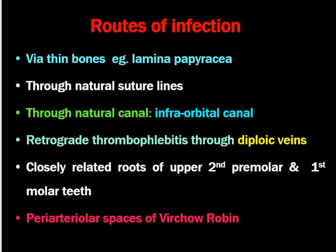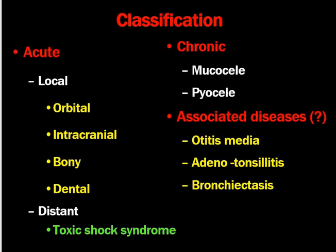There are different routes of infection: through thin bones like lamina papyracea, through natural suture lines, through natural canals like the infraorbital canal, retrograde through lymphatics, through diploic veins of the skull especially the superior orbital vein in the anterior aspect. The closely related roots of upper second premolar and first molar teeth have direct communication with the maxillary sinus, and periapical abscesses are also common causes for spreading infection.